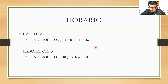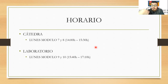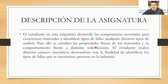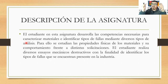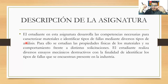Si leemos la descripción de la asignatura, nos dice que el estudiante va a poder desarrollar competencias necesarias para caracterizar materiales e identificar los tipos de fallas mediante diferentes tipos de análisis. Esta es una línea de estudios que se llama análisis de falla y error: se hacen estudios metalúrgicos, mecánicos, pruebas a piezas, pruebas de dureza y de tensión, para saber por qué pudo haber fallado alguna estructura o componente de un equipo.